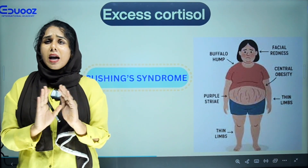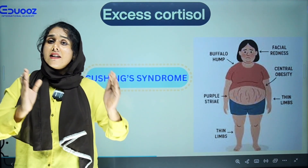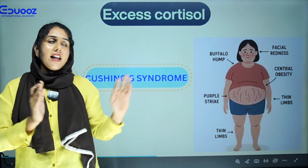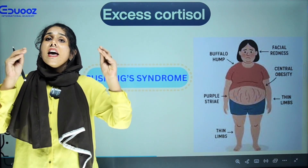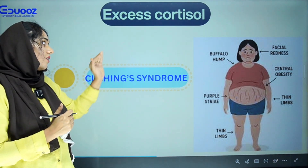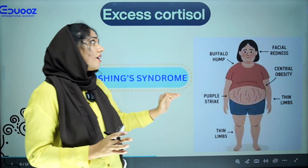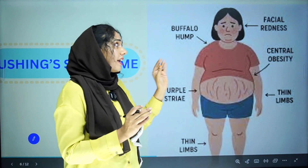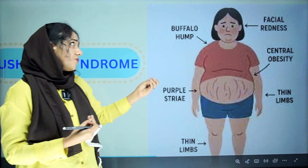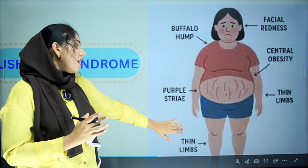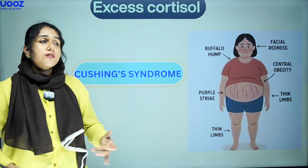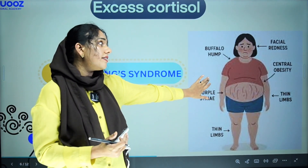Next, we look at cortisol. In the exam, we need to know Cushing syndrome and Addison syndrome. Cushing syndrome is caused by excess of cortisol secretion from the adrenal cortex. Features of Cushing syndrome include facial hair, redness, central body obesity, thin limbs, striations and stretch marks, and buffalo hump.